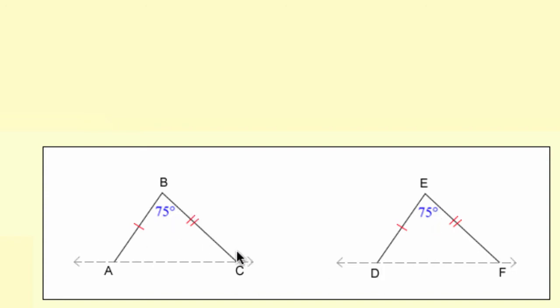If those side lengths and angle are defined, there's only one triangle you can make. And you can see that triangle ABC and triangle DEF have to be congruent.